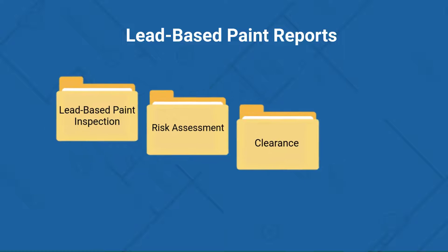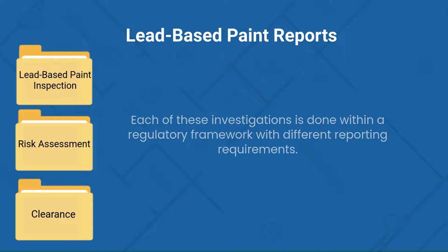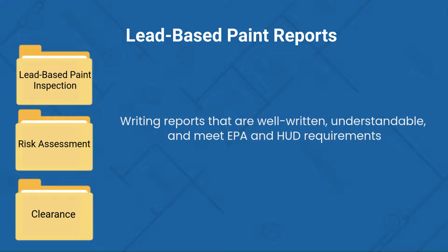Each of these investigations is done within a regulatory framework with different reporting requirements. The professional responsibilities of an inspector include writing reports that are well-written, understandable, and meet EPA and HUD requirements.